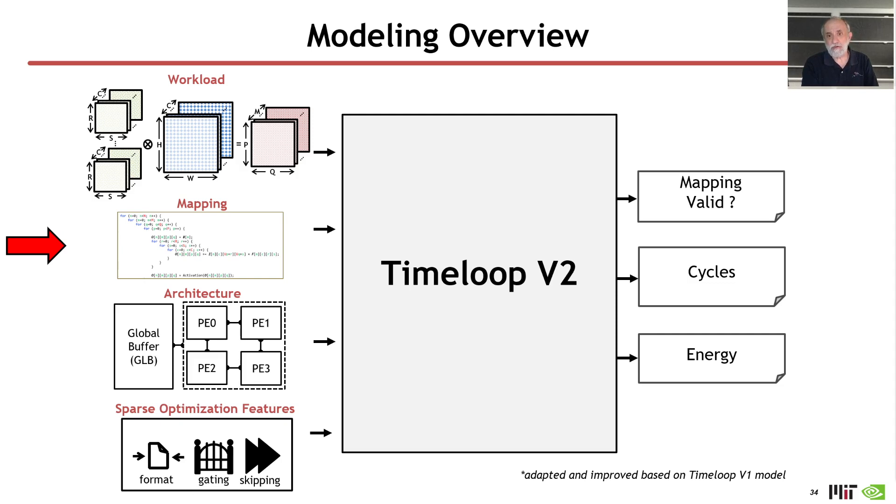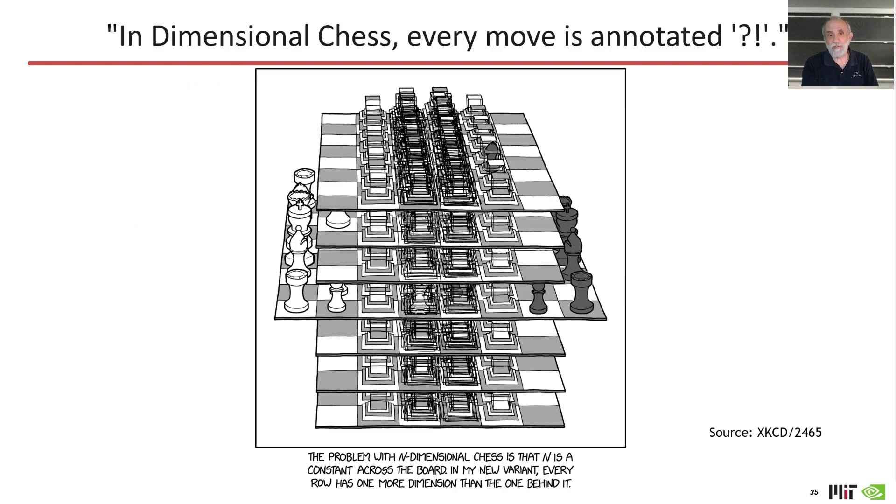In order to address this, we're going to introduce the notion of a tensor abstraction, be that tensor dense or sparse. We're going to take some of our initial motivation from a recent XKCD cartoon that says, in dimensional chess, every move is annotated. Here they have this multidimensional tensor representing a chess board, and you need a way of talking about the locations and the moves on the board. So we're going to need to do the same thing.